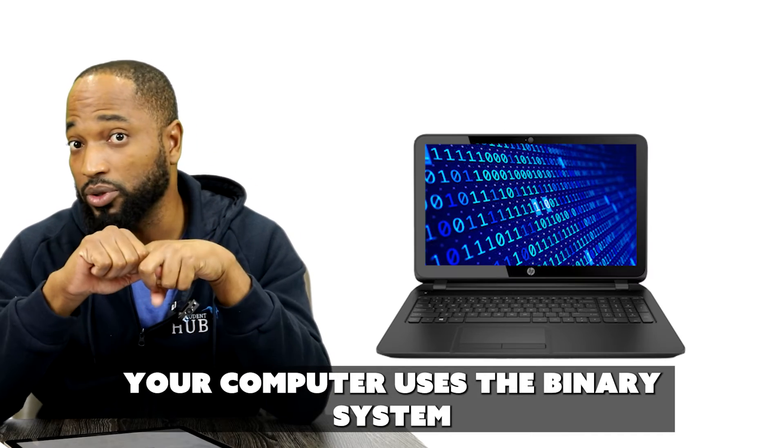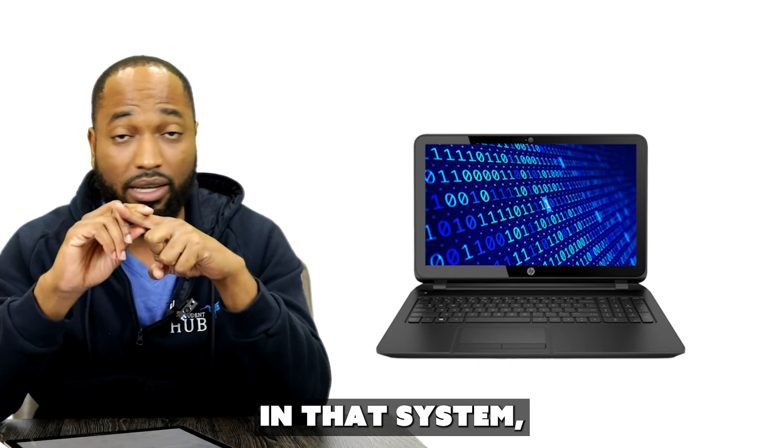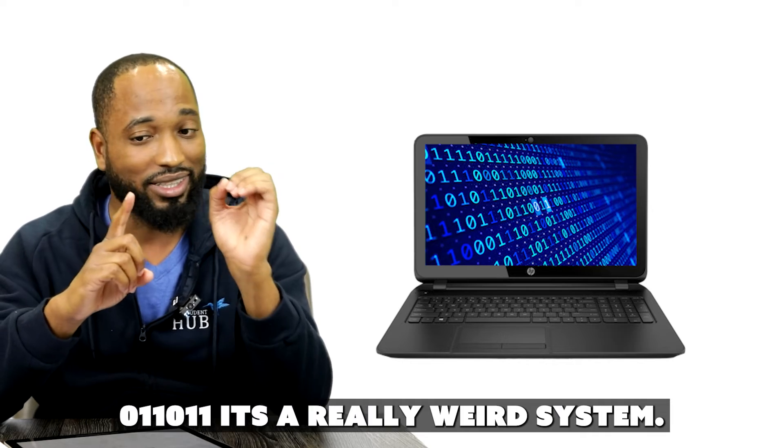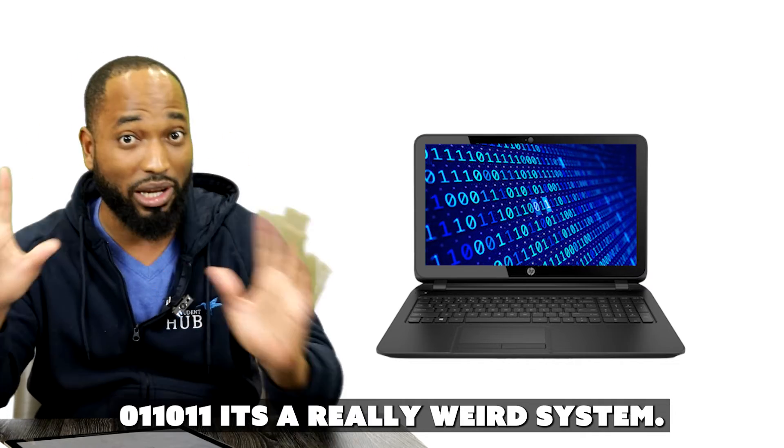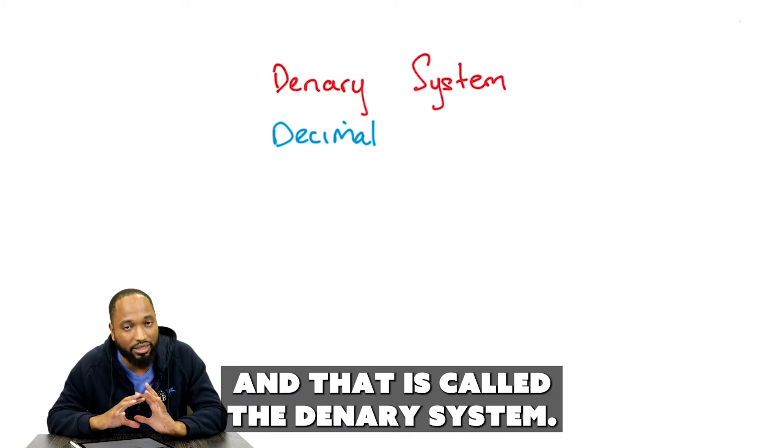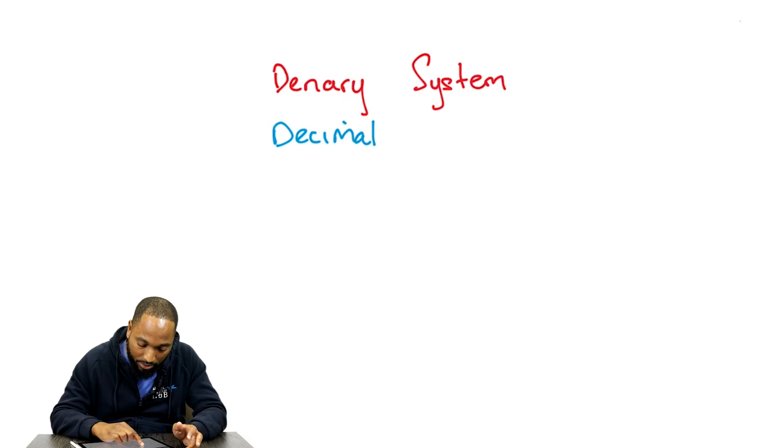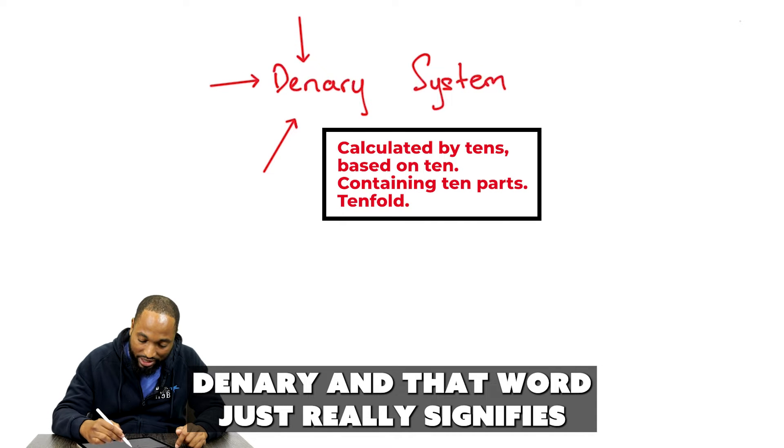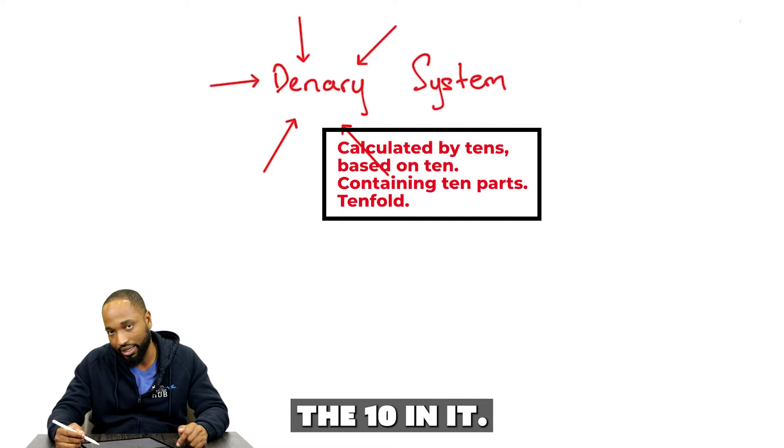Different systems. Your computer uses the binary system. In that system, there are only zeros and ones. 0, 1, 1, 0, 1, 1. It's a really weird system. We, however, just count with the 10 system. And that is called the denary system. Denary. And that word just really signifies the 10 in it.